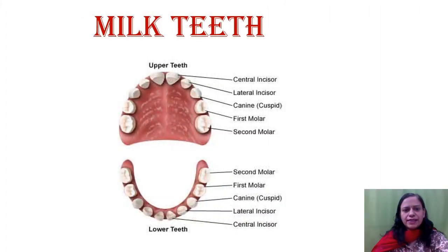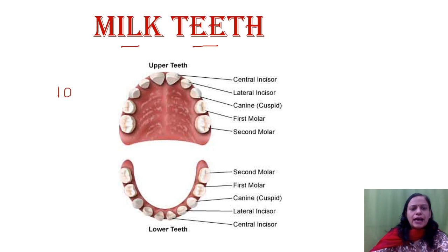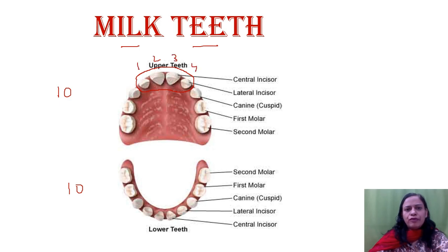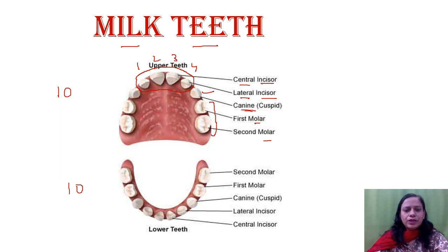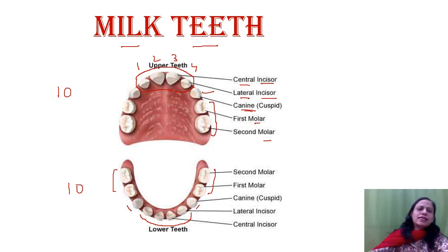Before discussing the types of permanent teeth, let's have a quick look at the milk teeth. In the upper jaw there are 10 teeth and in the lower jaw again there are 10 teeth. The middle four teeth are the incisors — the central ones are known as central incisors and the side ones as lateral incisors. Just adjacent to the incisors we have the canine, and then we have two molars. The set of milk teeth doesn't have any premolars. The same arrangement applies in the lower jaw as well.